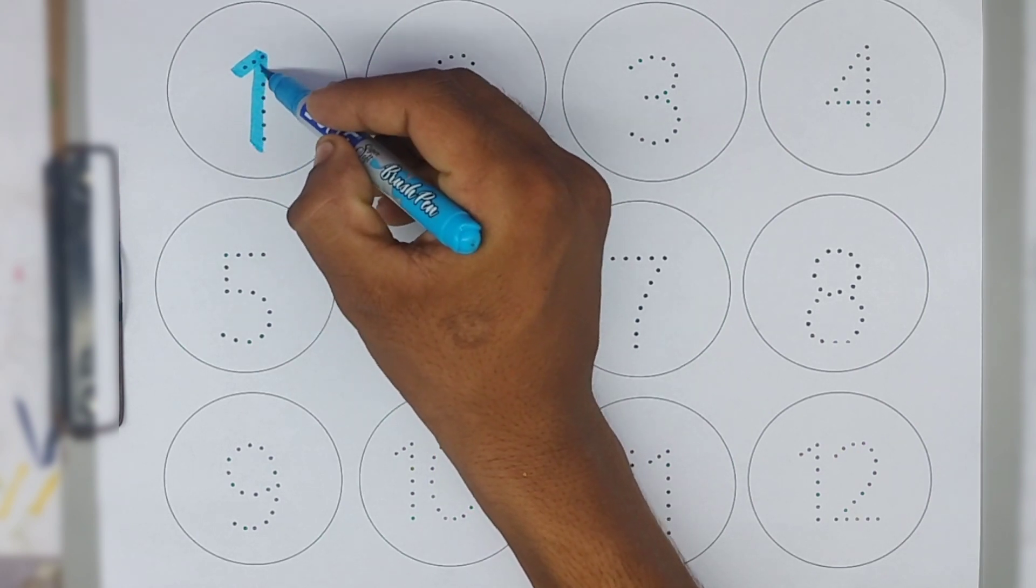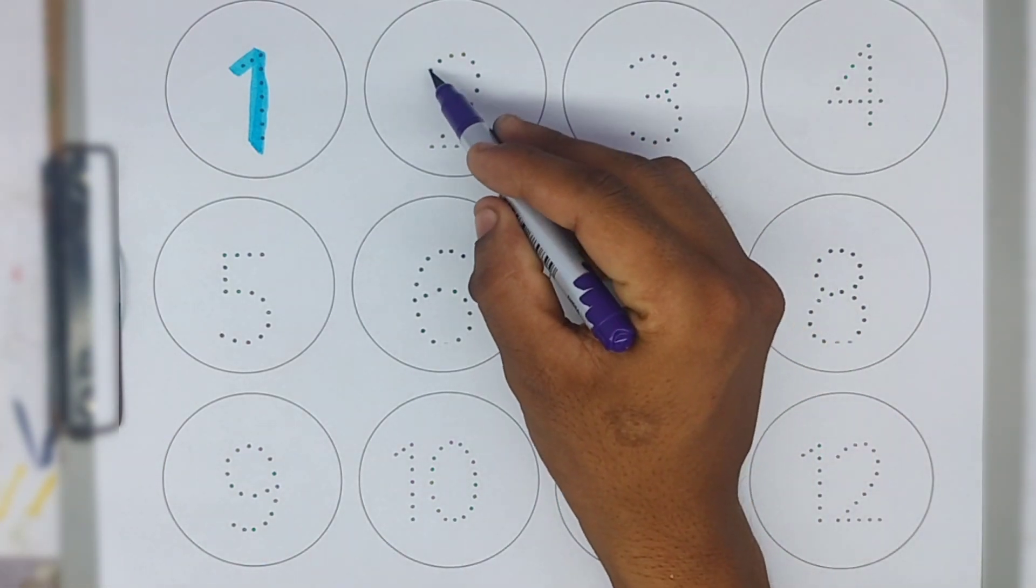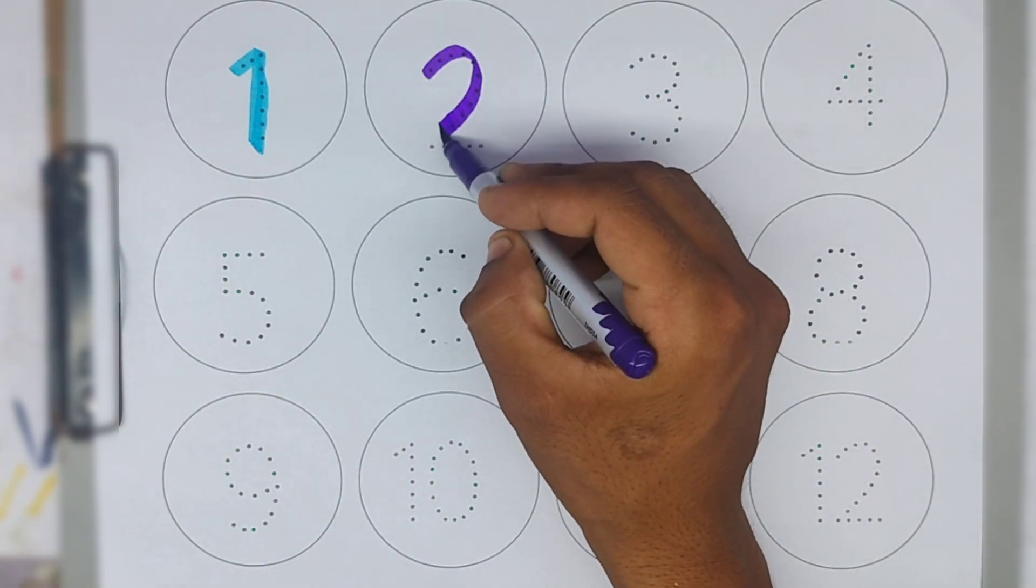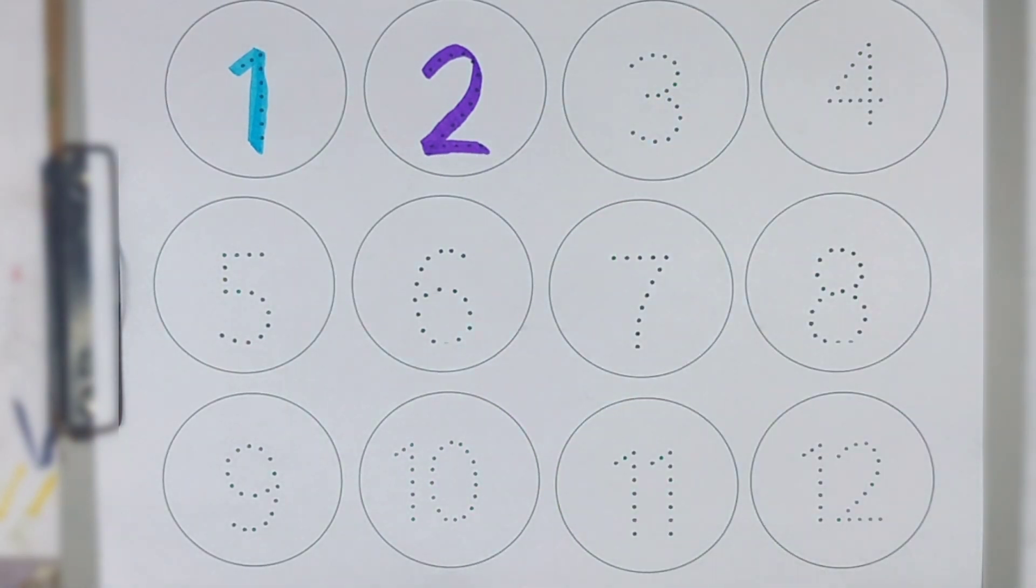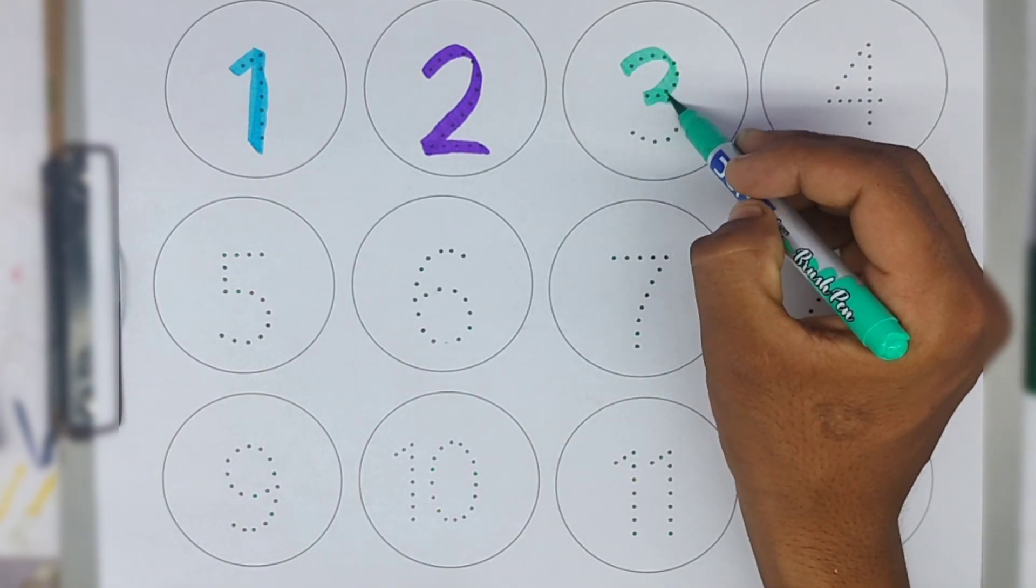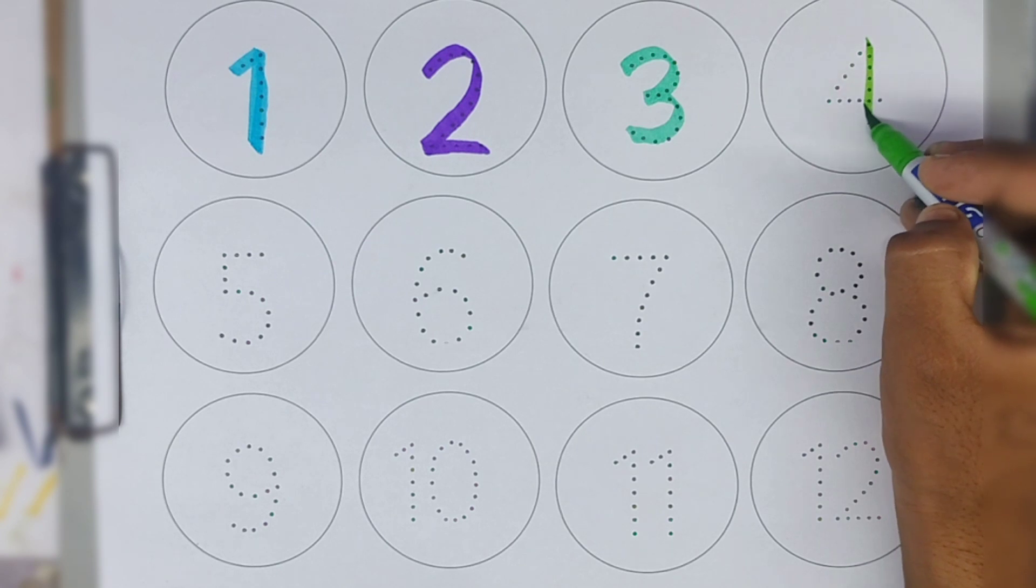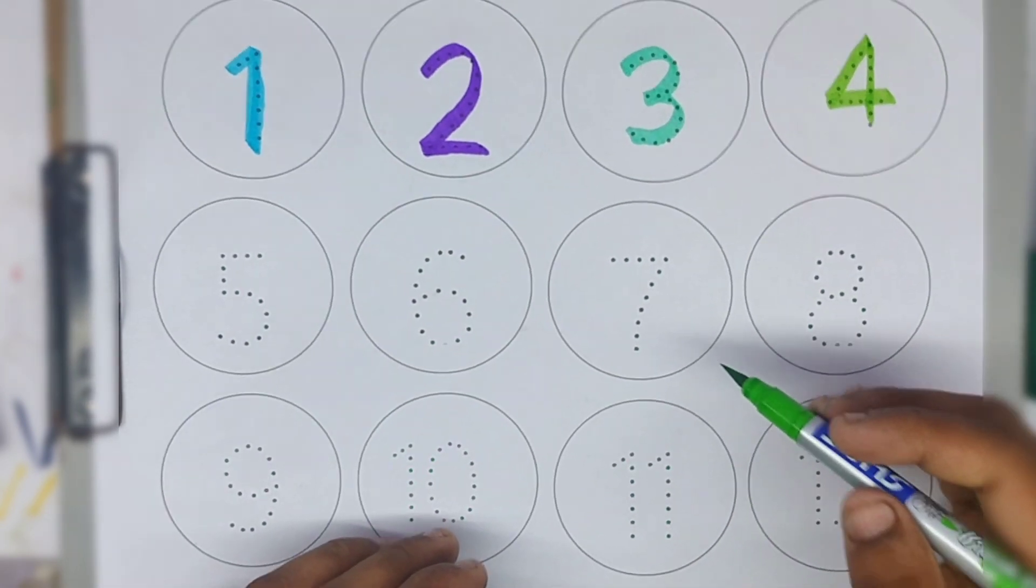Number 1, sky blue color. Number 2, purple color. Number 3, light blue color. Number 4, parrot color. Number 5.